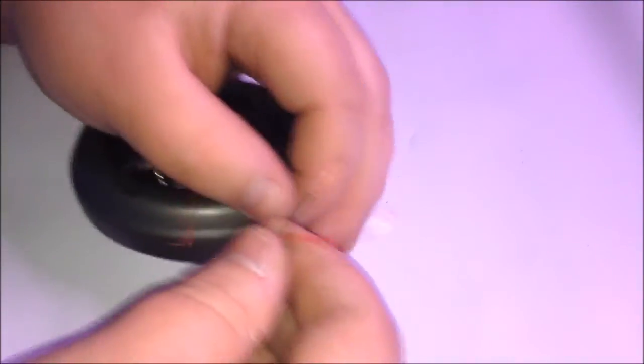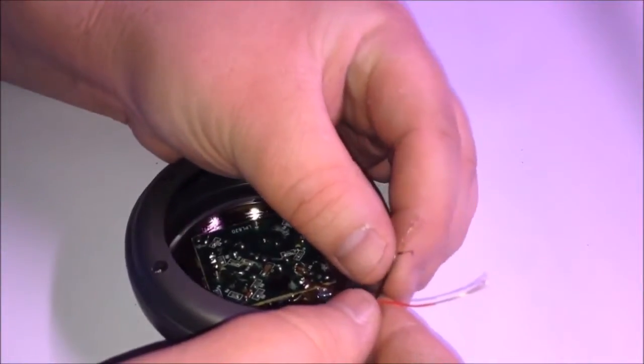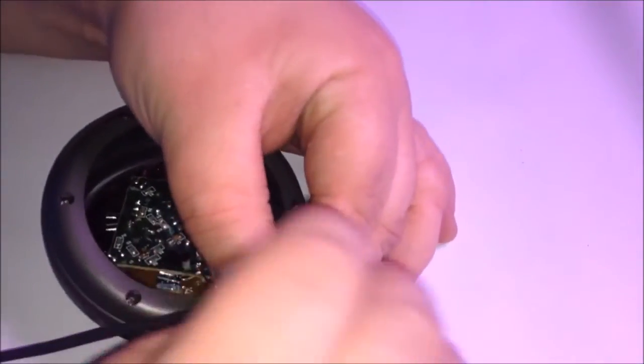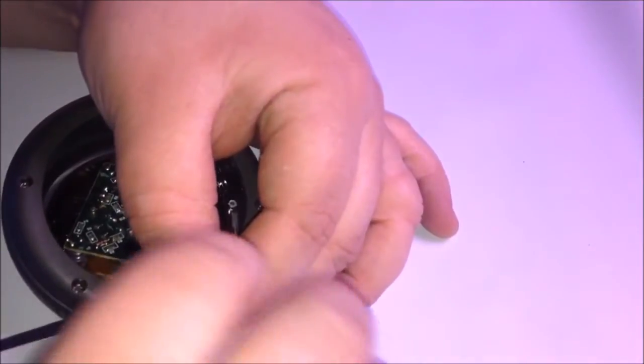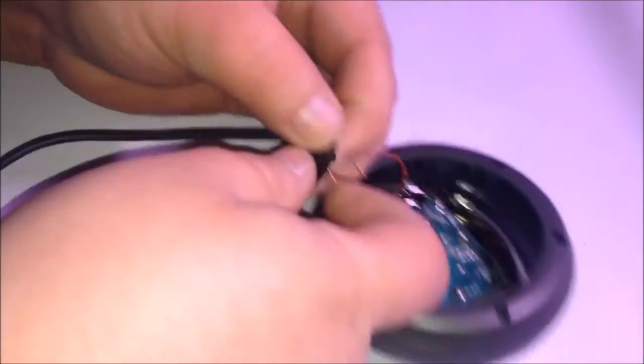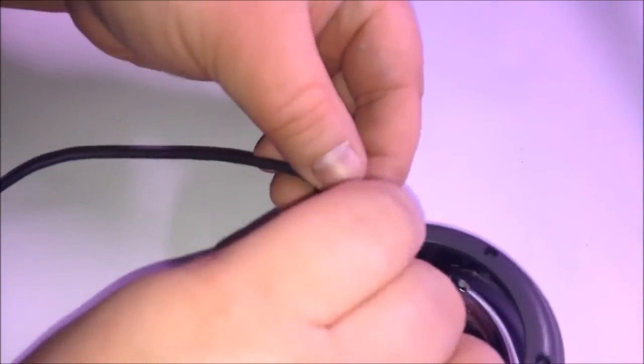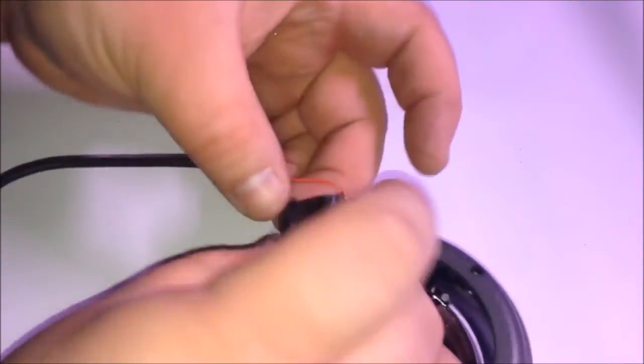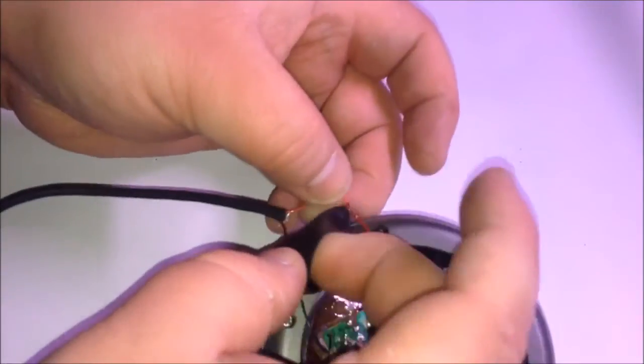Once you've slipped it through, you're pretty much good to begin connecting and twisting your wires. You can solder at this point, but this was just a simple video. I just chose to twist and tape, and that'll work just as good. That way, if you want to break it down in the future, it's not so difficult - you just yank on it.